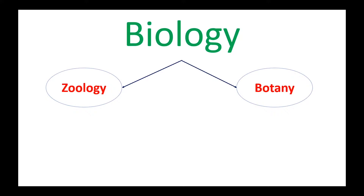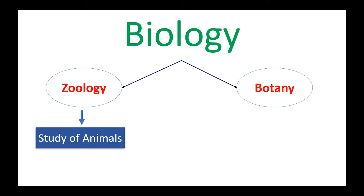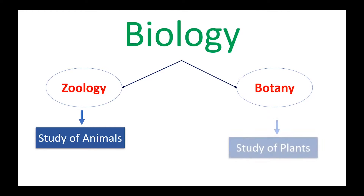Biology is mainly divided into two groups: zoology and botany. Zoology is the branch of biology in which we study about animals. Botany is the branch of biology in which we study about plants.